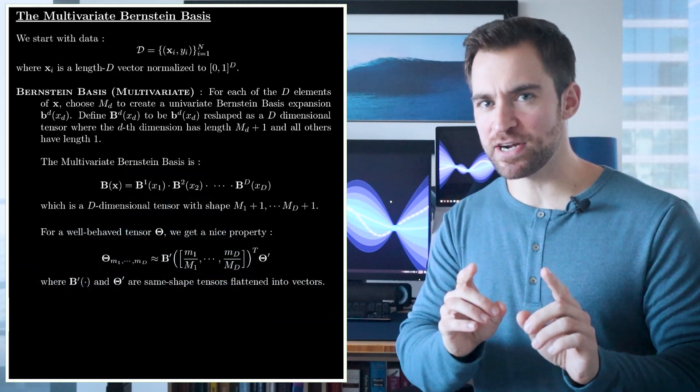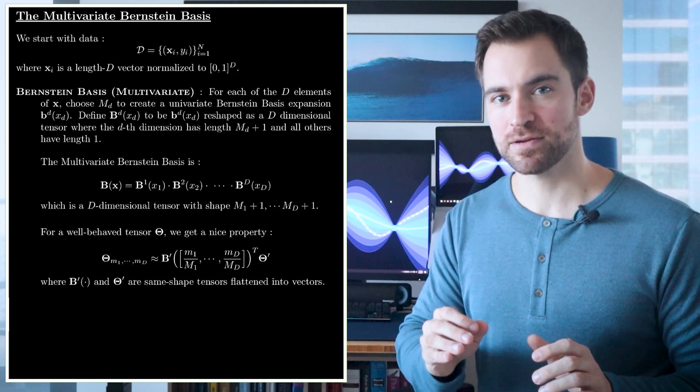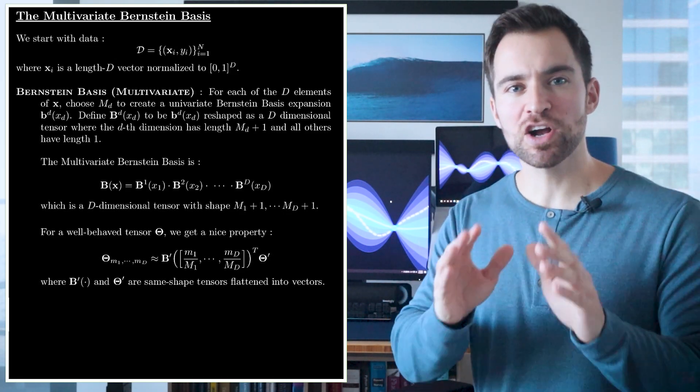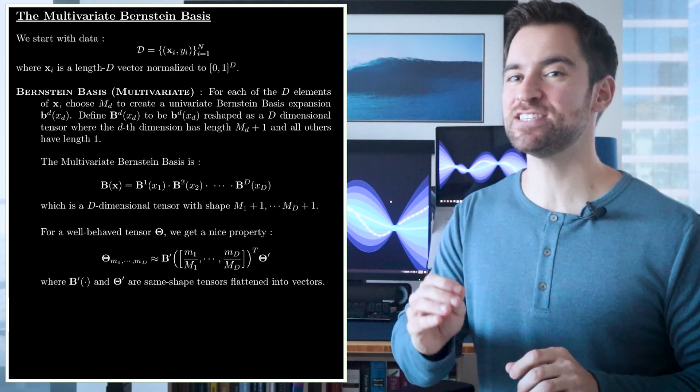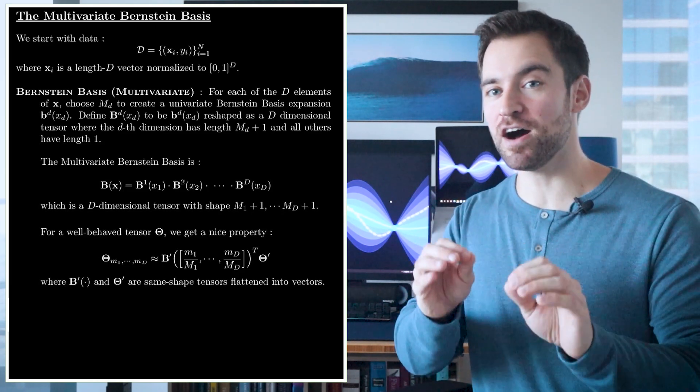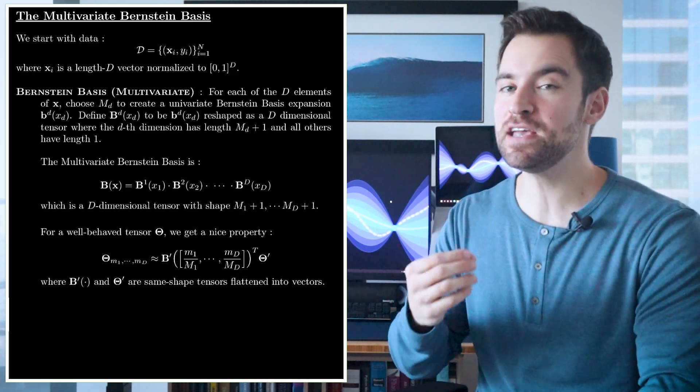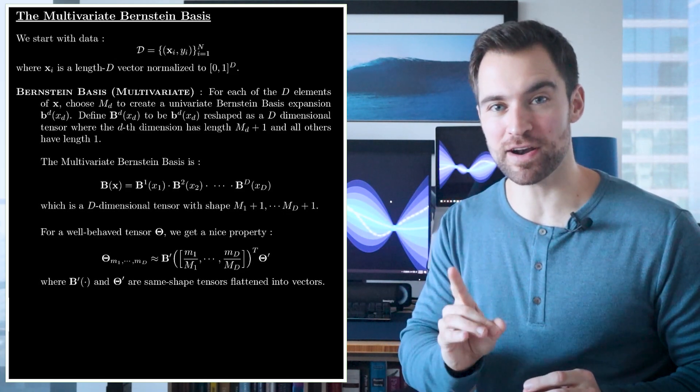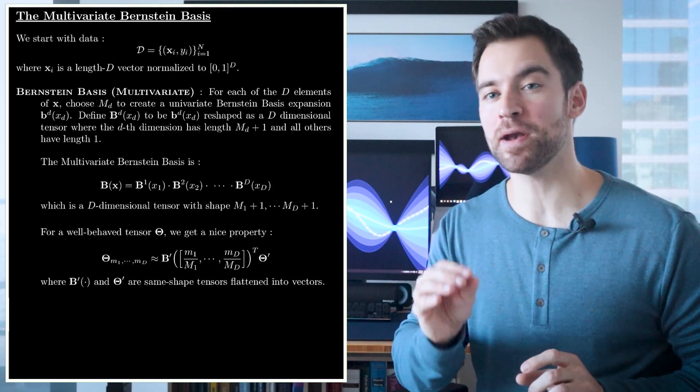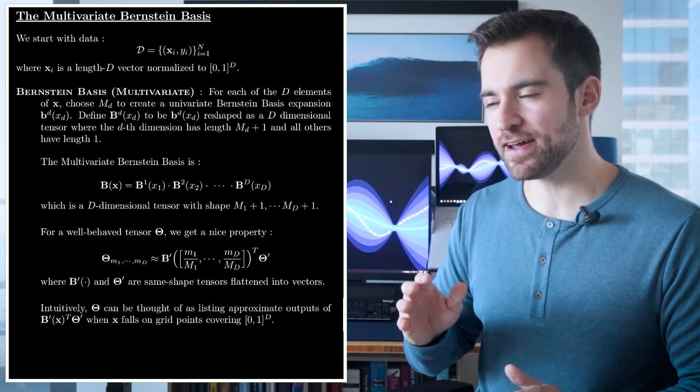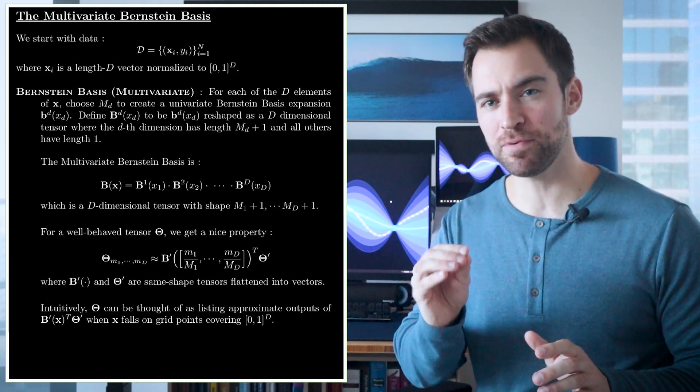Now, before you study this equation, let me describe what it's saying. First, consider the space where x lives, which is the unit cube in d dimensions. Now, consider an evenly spaced lattice of points covering that space and pick one of those points. Now, plug that point into b, giving us back a tensor in d dimensions. I'll call this b of the grid point. Next, let's imagine we provide a coefficient tensor of the same shape. Then, we flatten b of the grid point and theta into long vectors and take their dot product. Well, that would give us a number which is close to a value within theta, the one associated with the grid point plugged into b. In other words, you can think of theta as listing out approximately all the values you'd get if you took its dot product with b of different grid points.